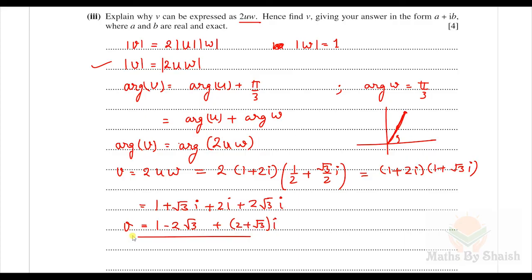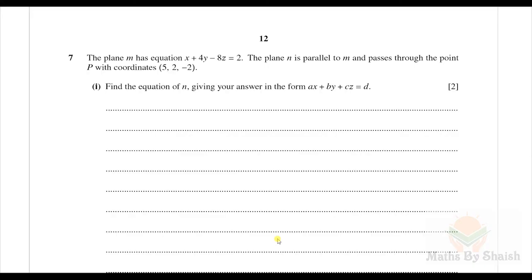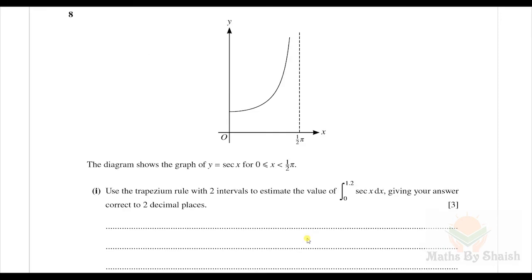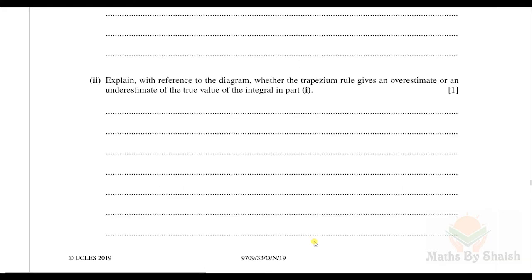Question 7 involves planes, which are no longer in the syllabus, so we will not discuss it. Let's go to question 8. The diagram shows the graph of y = sec(x) for x between 0 and π/2. Parts using the trapezium rule are also not in the syllabus, so we skip those. Here's part 3: P is the point on the graph y = sec(x) for x in [0, π/2] at which the gradient is 2.